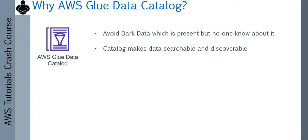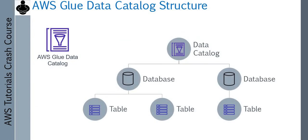So how is this data catalog organized or structured? At the top you have got Glue Data Catalog, and in Glue Data Catalog you can create multiple databases. And in those databases you can create multiple tables. These tables are actually the catalog, which keep information about your data in the data platform. So if you have data in an S3 bucket, one table will represent that S3 bucket data.